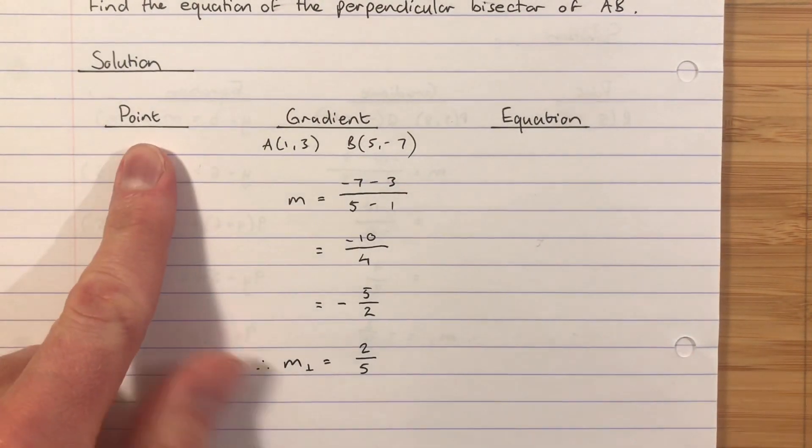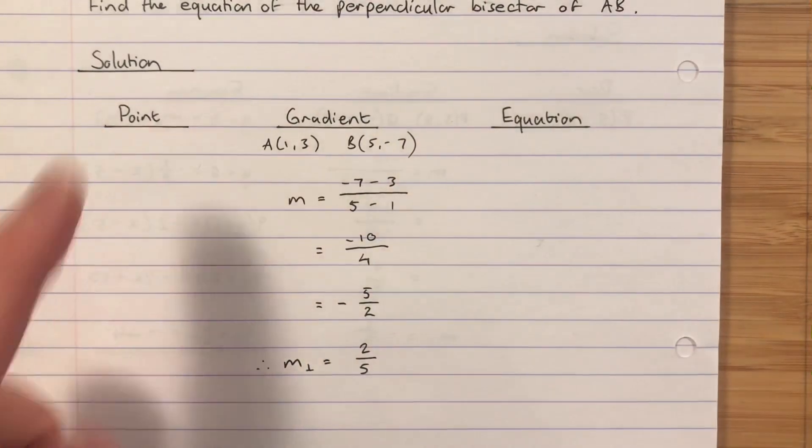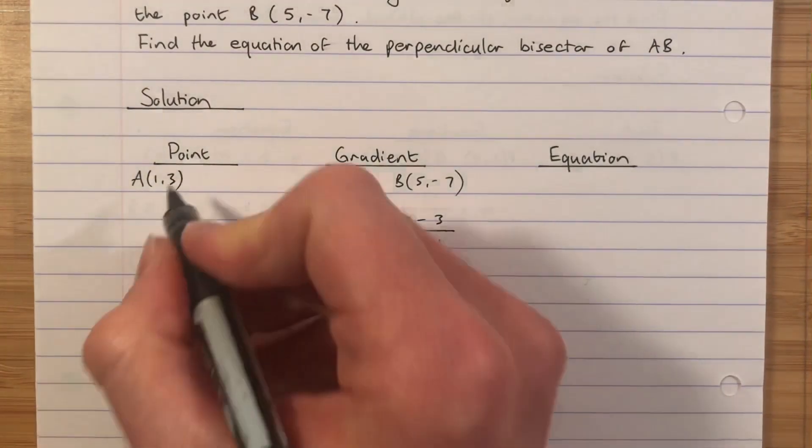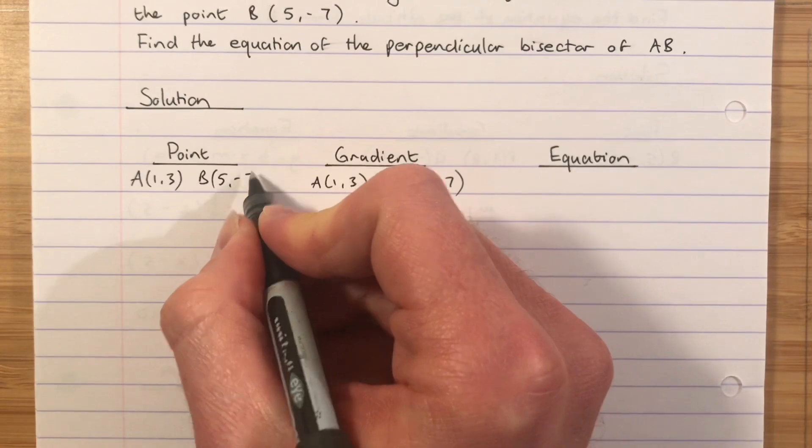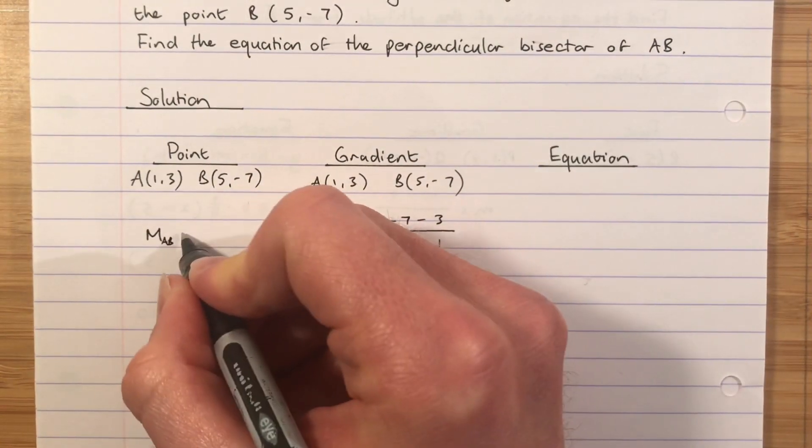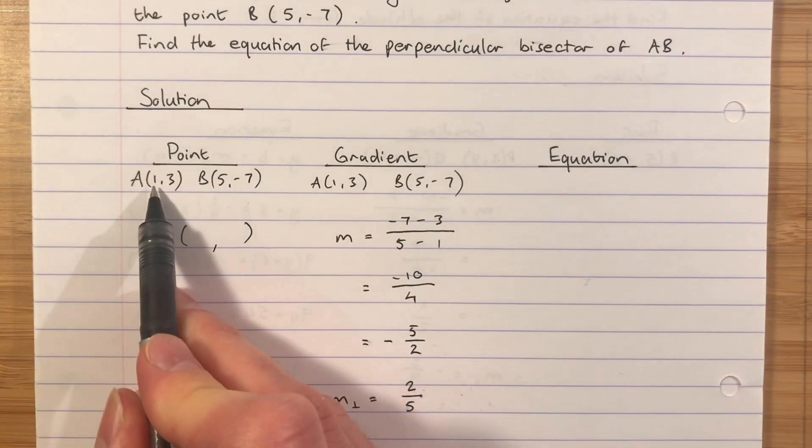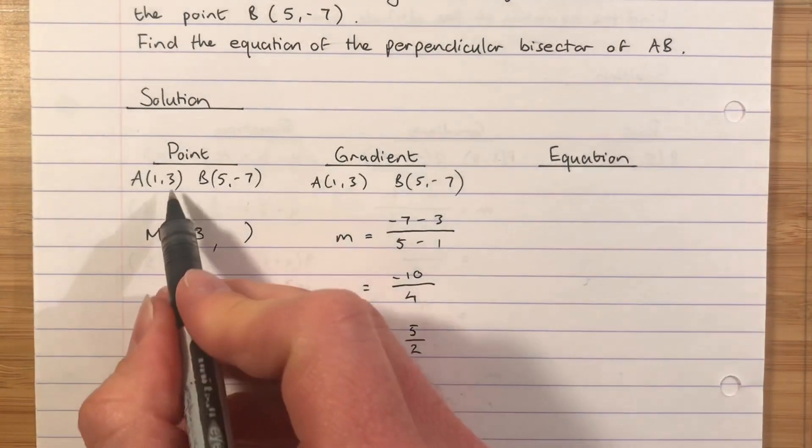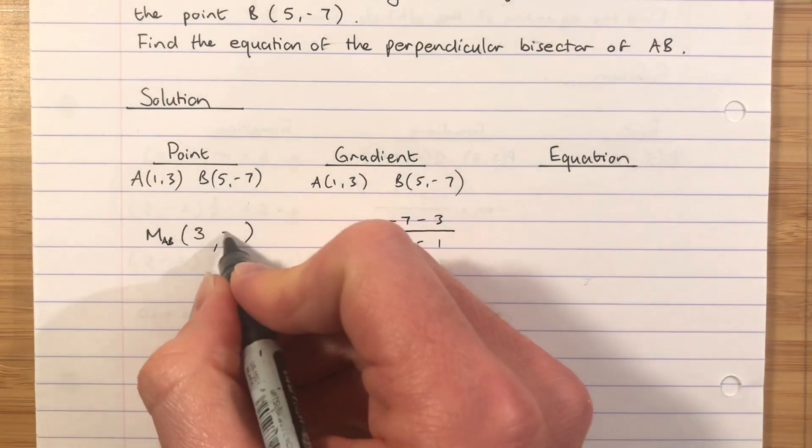Well, the point, let's go back to perpendicular. I've done that. Bisector means I have to find the midpoint. A is the point (1,3). B is the point (5,-7). Remember, capital M for midpoint, subscript AB. Find the average of our x's. 1 add 5 is 6. Half it is 3. 3 add -7 is -4. Half it is -2.